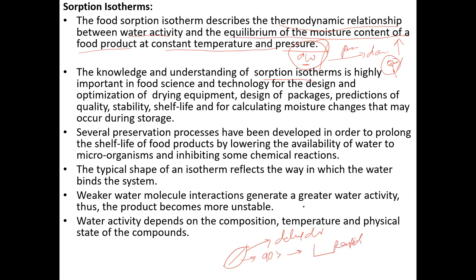Then slowly all moisture loss takes place. For example, if drying at 80°C for 4 hours, what is the effect on textural quality? If dehydrating at 60°C for 6 hours, or at 40°C for 12 hours — what is the effect on textural quality? The sorption isotherm gives an idea of the thermodynamic relationship between free water and the equilibrium moisture content of the food product.